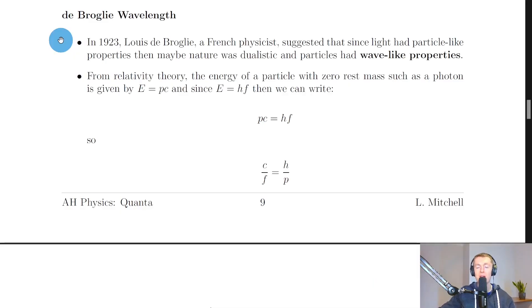A particular part of wave-particle duality in the advanced higher physics course is de Broglie wavelength. In 1923, Louis de Broglie, a French physicist, suggested that since light had particle-like properties, then maybe nature was dualistic and particles had wave-like properties as well.